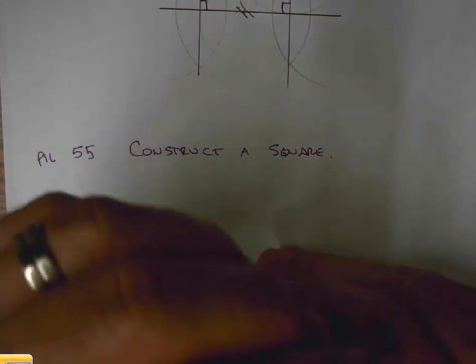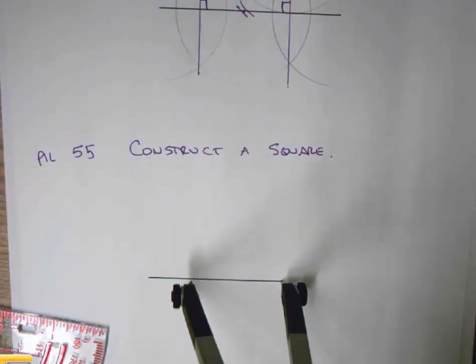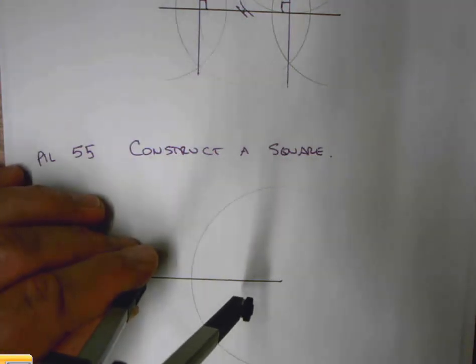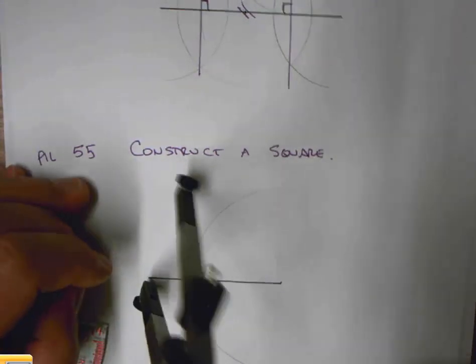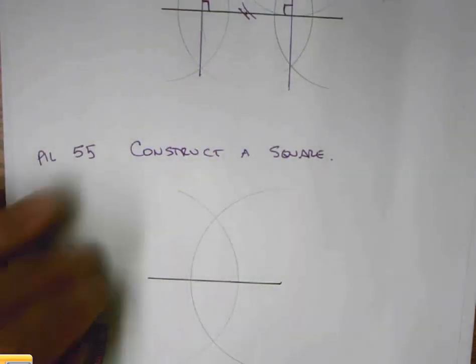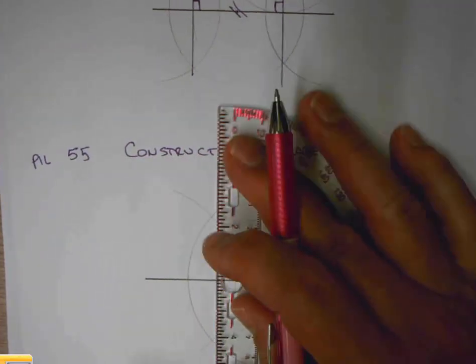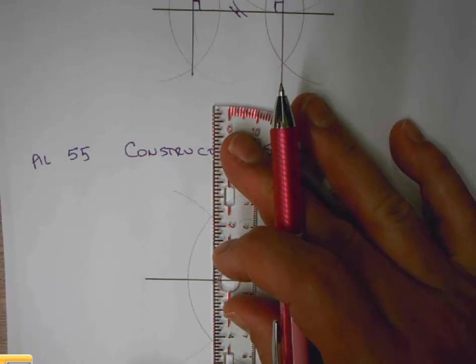We then create a perpendicular bisector. So I'm lining up more than halfway. Make my football. Connect the end point to my football. And this produces, as we know, a perpendicular bisector of the segment.